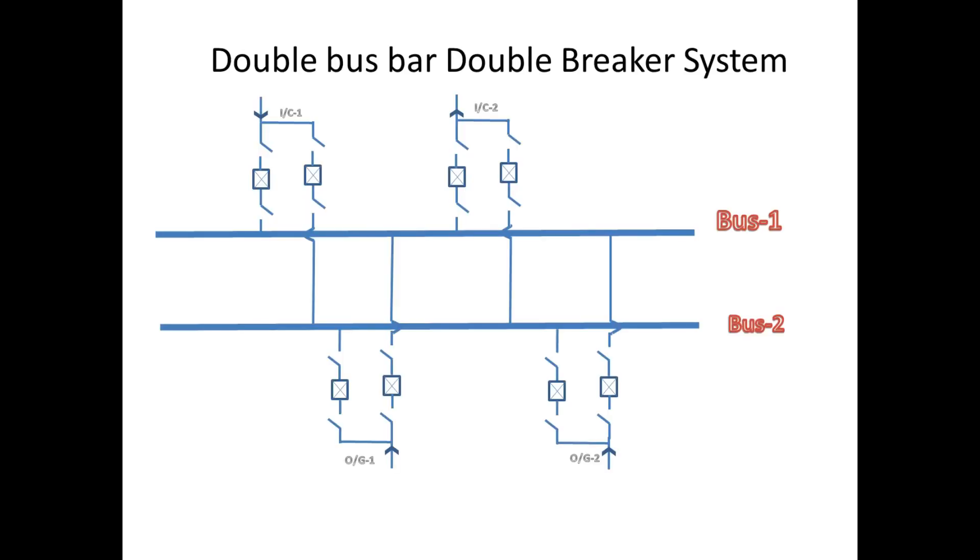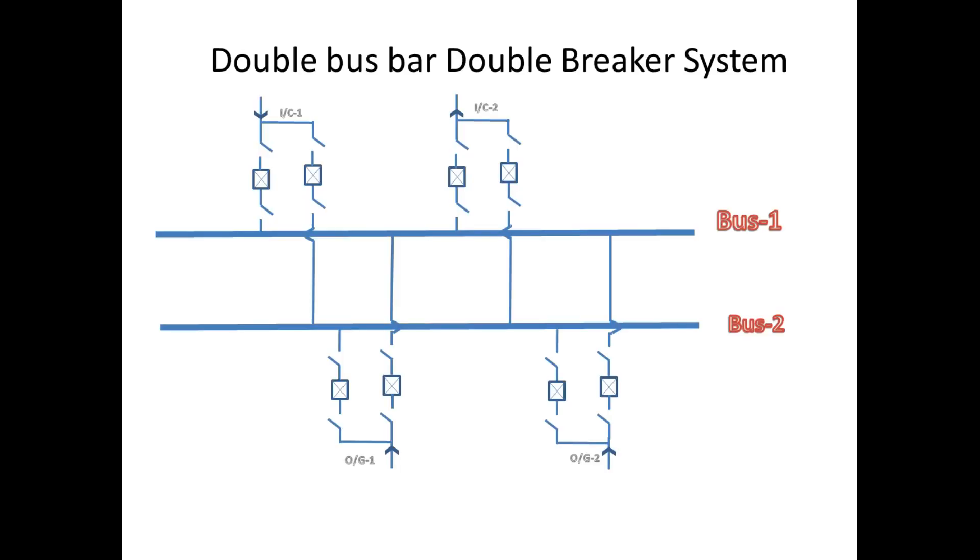In double bus double breaker arrangement, the feeders are connected in parallel to both buses with the help of two circuit breakers and four isolator switches instead of a bus coupler.